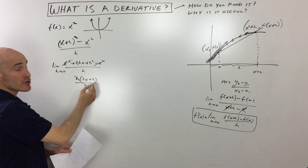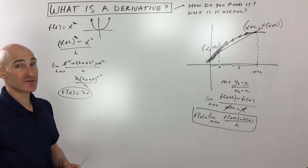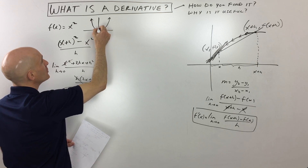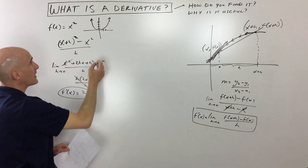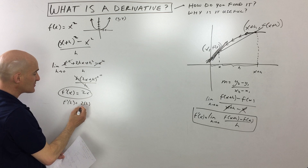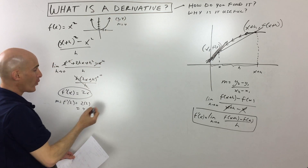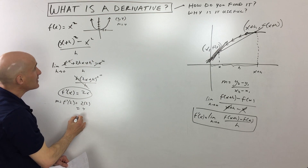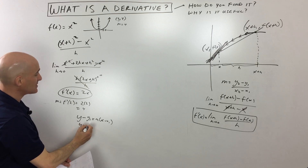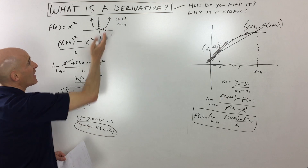Remember, it's the limit as h approaches zero. If we put zero in for h, we're left with 2x, and this is our formula for our derivative — which is just a formula for the slope of the tangent line. A simple example: say we're interested in finding the slope at the point (2, 4). We put in the x coordinate 2, so that's f prime of 2, which equals 2 times 2, which equals 4. So the slope is 4, and it goes through the point (2, 4). Let's write an equation of the tangent line using point-slope form: y minus 4 equals 4 times x minus 2. That's our equation for the tangent line.